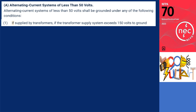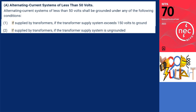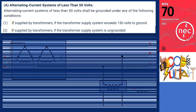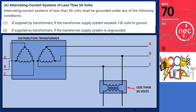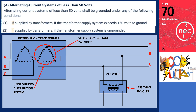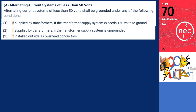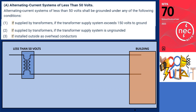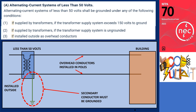For condition 2, if supplied by transformers, if the transformer supply system is ungrounded — for example, a delta-connected system, which is an ungrounded distribution system. In this case, regardless of the voltage, it is necessary to connect one of the transformer's secondary conductors to the ground. For the third condition, if the alternating current system is installed outside as overhead conductors and the transformer primary conductors enter the building from outdoors as overhead conductors, the system must be grounded. This condition applies when the system operates at a voltage of less than 50 volts and the conductors are installed on poles outside the building.